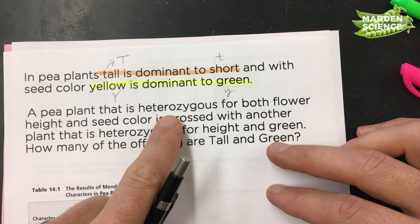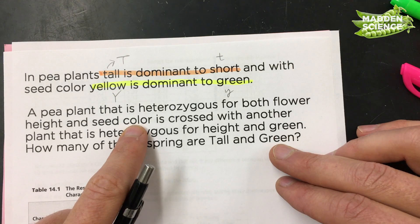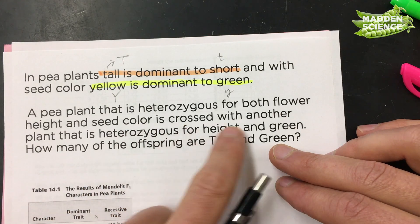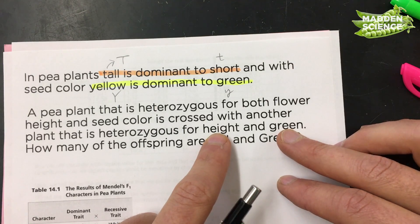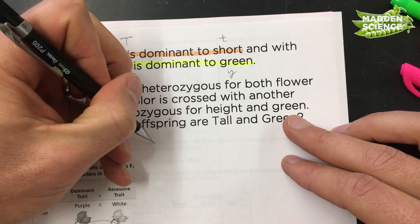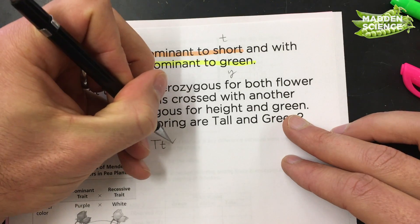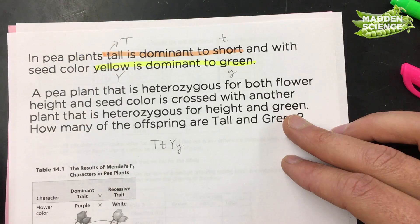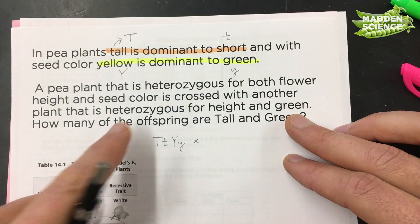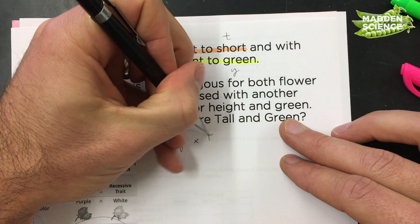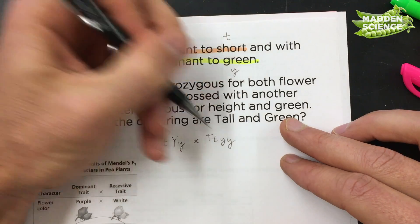Now the question: a pea plant that is heterozygous for both flower color and height and seed color is crossed with another plant that is heterozygous for height and green. Okay, so that's going to look like this. We're going to have heterozygous, so big T, little t, and big Y, little y, that's our heterozygous plant, crossed with heterozygous for height, which would be big T, little t, and it's green, which means that it's little y, little y.